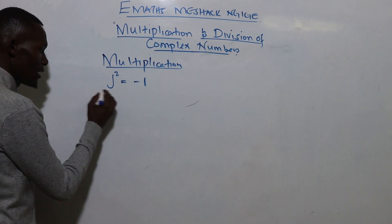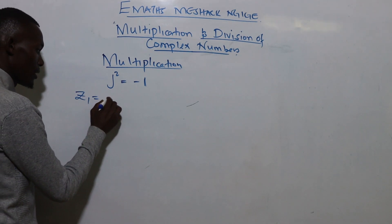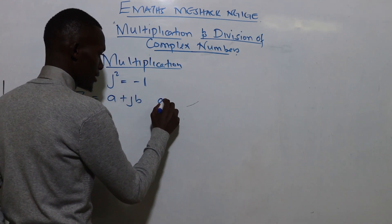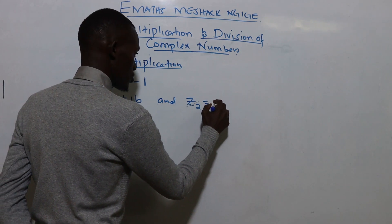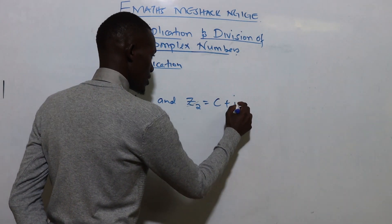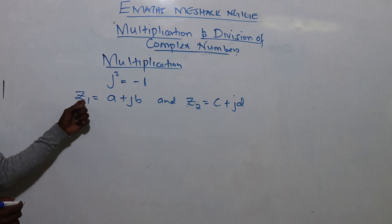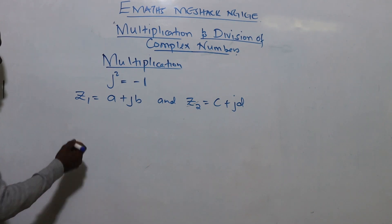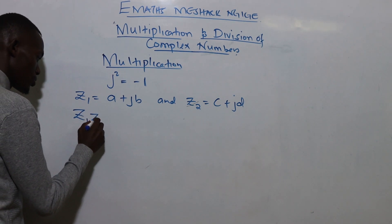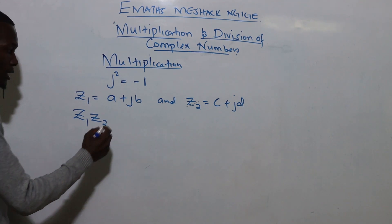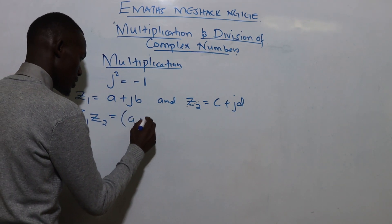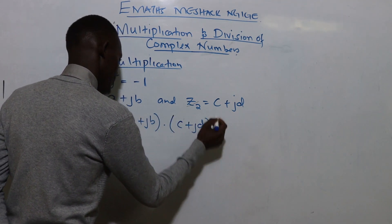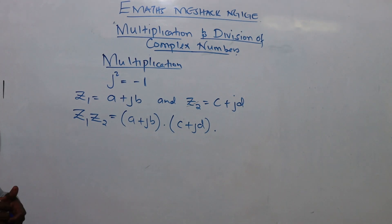In general, if you have two complex numbers z1 given by a plus jb and z2 equals c plus jd, the multiplication of these two is done the same way we multiply factors. So z1·z2 will be given by (a + jb) multiplied by (c + jd).